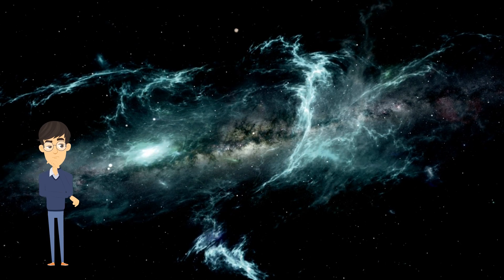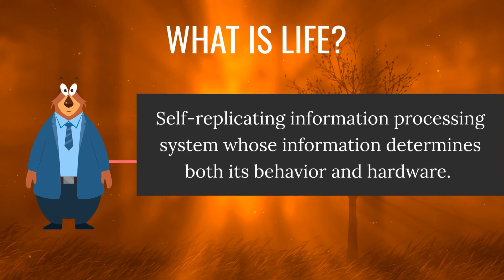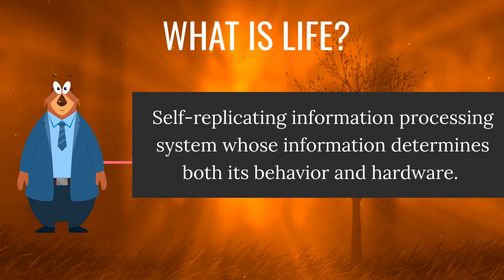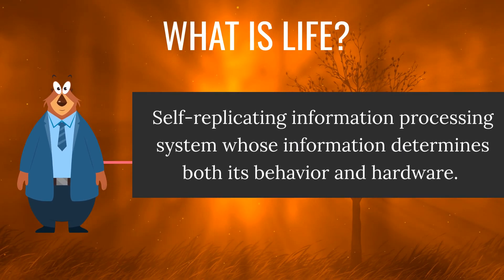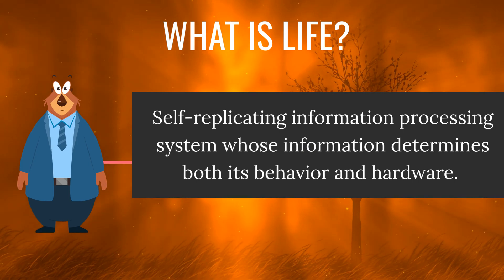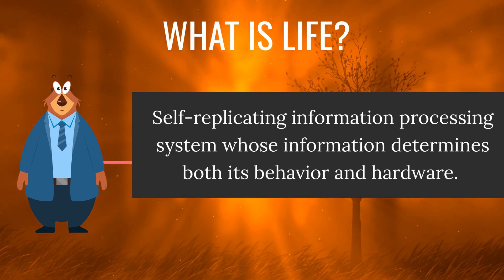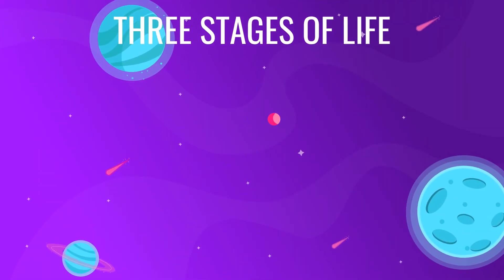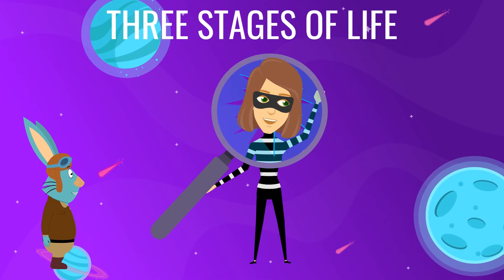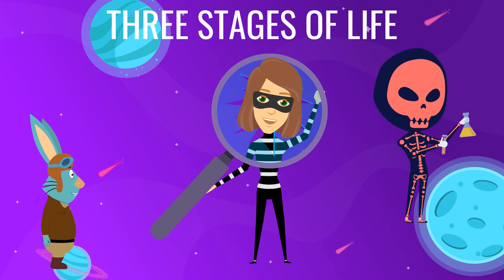First, let's explore the question of what is life. At a fundamental level, life is a self-replicating information processing system whose information determines its behavior as well as its hardware. Since life is an information processing system, where the information is contained and how the information is modified are the keys to distinguish the stages of the evolution of life.